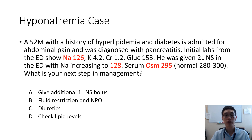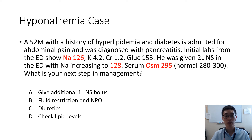Let's do a question to see if you understand the material. A 52-year-old gentleman with a history of hyperlipidemia and diabetes is admitted for abdominal pain and was diagnosed with pancreatitis. Initial labs from the emergency room show a sodium of 126, potassium of 4.2, creatinine of 1.2, and a glucose level of 153. He was given 2 liters of normal saline in the emergency room, with a sodium increasing to 128. The serum osmolality before the 2 liters of normal saline was 295. What is your next step in management?